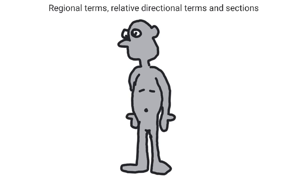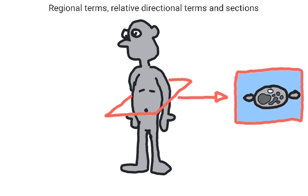Last up are the sections. These go with the different types of medical imaging devices that we frequently see listed in chapter one, and represent pictures taken through the body, or imaginary slices.